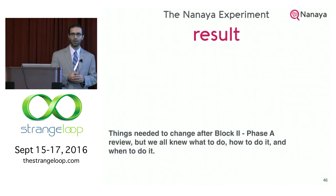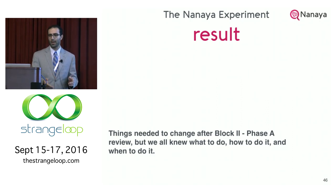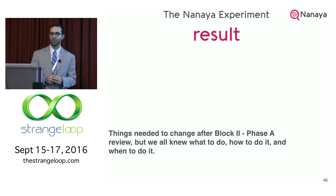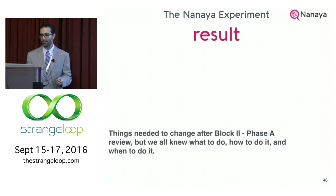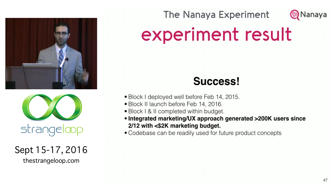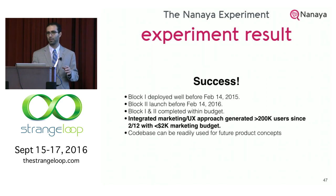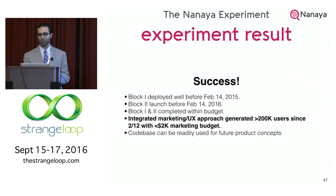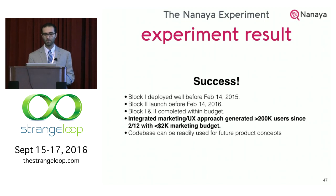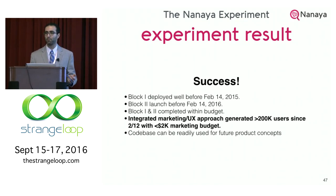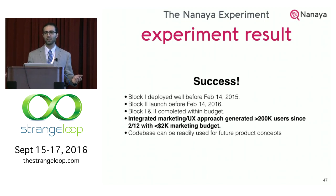When we got to block two phase A and reviewed, there were things that needed to change — but we actually already knew that from the beginning. The things that ended up changing weren't severe in scope and had minimal programmatic impact. The whole Nanaya experiment of applying this waterfall-ish approach was a success given the limited resources. We launched block one two years ago, block two this year, and we've had over 200,000 users since Valentine's Day. I'm doing the marketing, doing my PhD, and still supporting some JPL stuff. Our codebase is ready to go because we planned for everything down the line for other products as well.